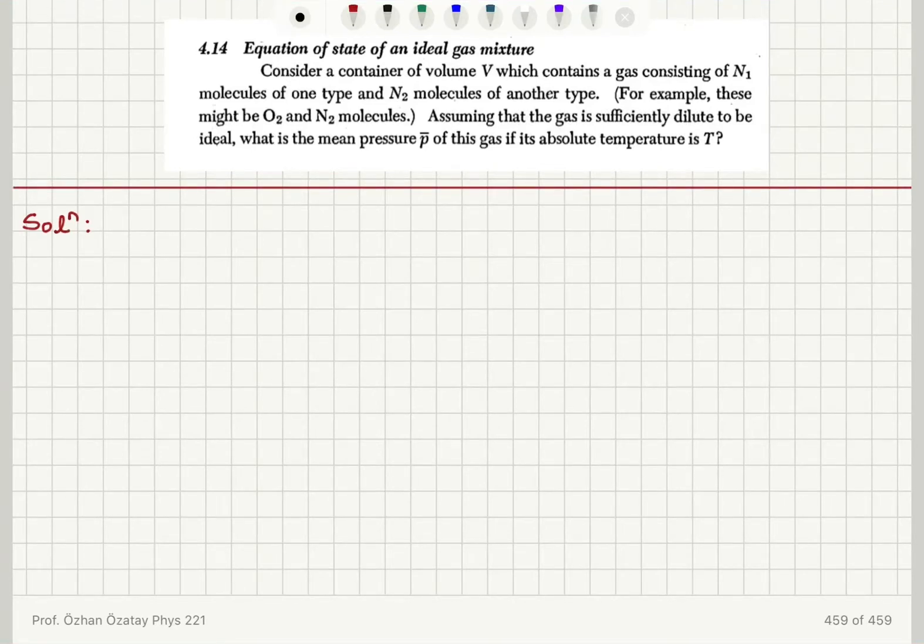Equation of state of an ideal gas mixture. Consider a container of volume V which contains a gas consisting of N₁ molecules of one type and N₂ molecules of another type. For example, these might be oxygen and nitrogen molecules. Assuming that the gas is sufficiently dilute to be ideal, what is the mean pressure of this gas if its absolute temperature is T?